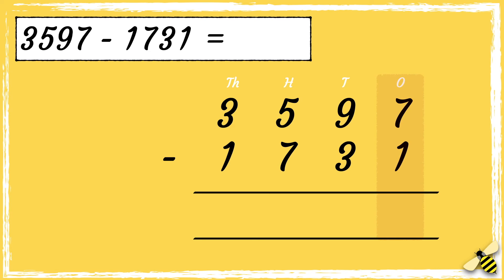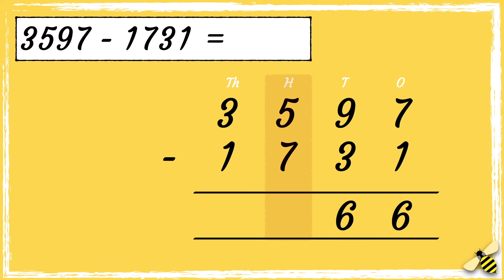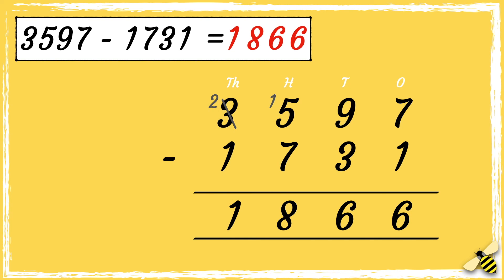First we subtract the ones: seven take away one equals six. Then we subtract the tens: nine take away three equals six. Then we subtract the hundreds — we can't do five take away seven, so we need to exchange from the thousands. Fifteen take away seven is eight. And finally we subtract the thousands: two take away one equals one. So the answer is one thousand eight hundred and sixty-six.